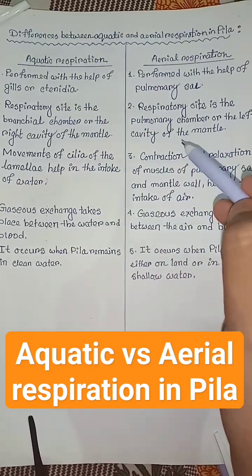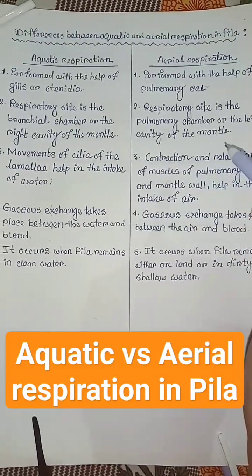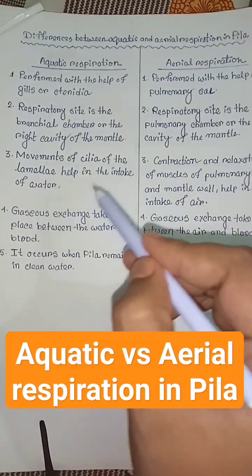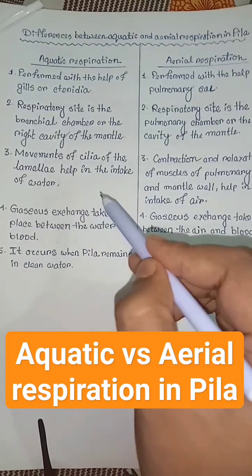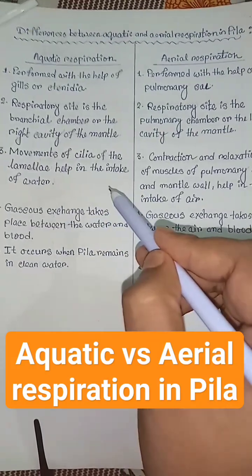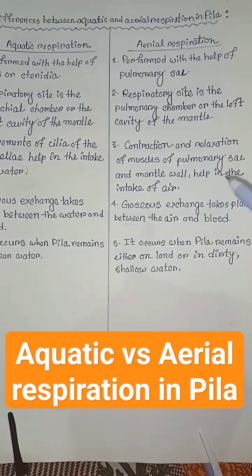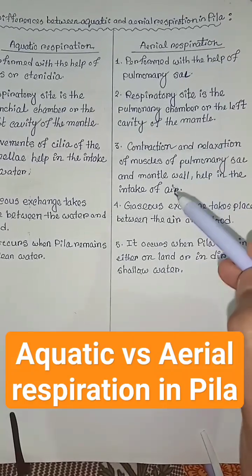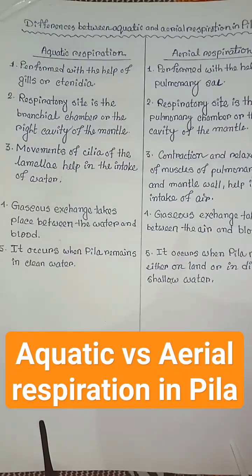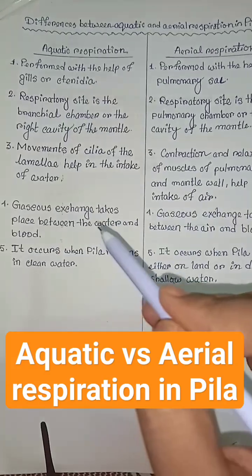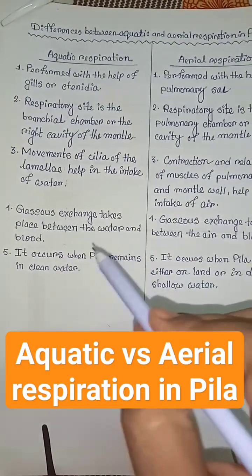In aerial respiration, the respiratory site is the pulmonary chamber, or the left cavity of the mantle. Movements of cilia of the lamella help in the intake of water in aquatic respiration, but contraction and relaxation of muscles of the pulmonary sac and mantle wall help in the intake of air in aerial respiration.